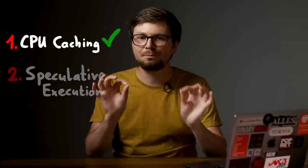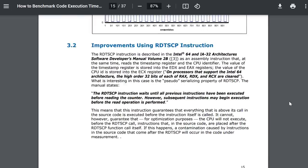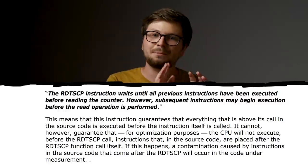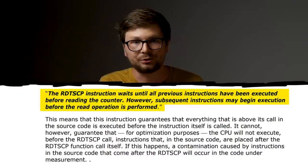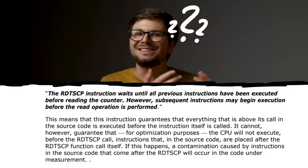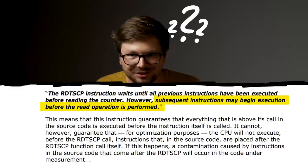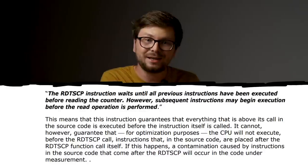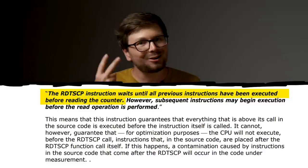We just saw the impact CPU caches can have and how we can measure it — and that will become super important soon. Going back to the Intel benchmark paper, I noticed something interesting: they quote the Intel instruction manual saying the RDTSCP instruction waits until all previous instructions have been executed before reading the counter. However, subsequent instructions may begin execution before the read operation is performed. Instructions coming after RDTSCP might actually be executed by the CPU before RDTSCP is finished — this is out-of-order execution, and that's why Intel recommends calling it twice as a barrier.